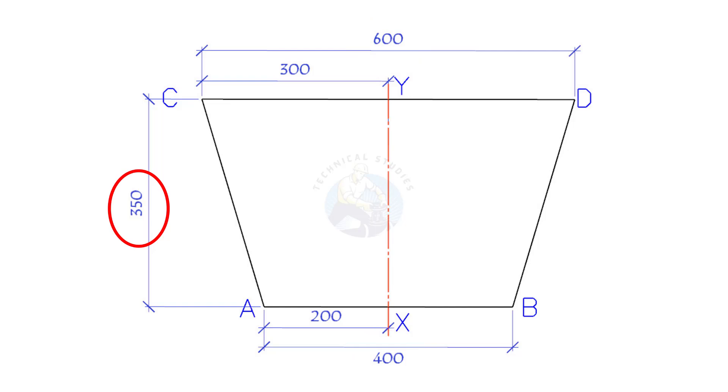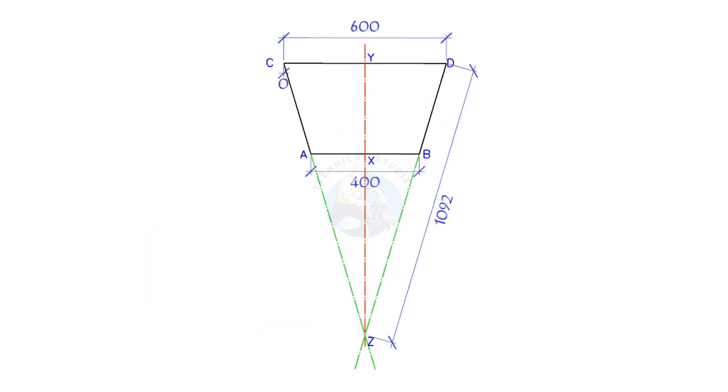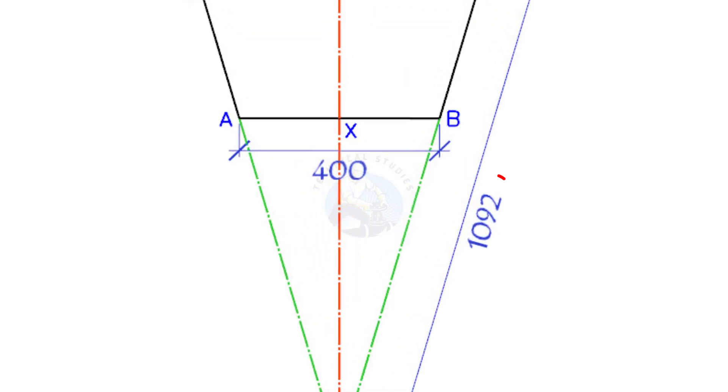Draw the front view, as shown. Extend the lines CA and DB, intersecting at point Z. Note down the length DZ.